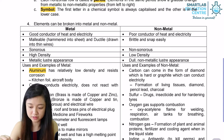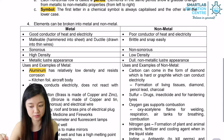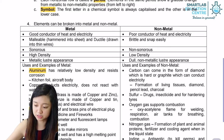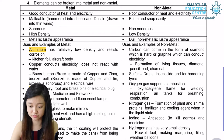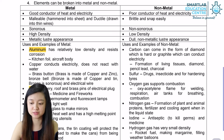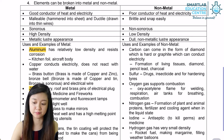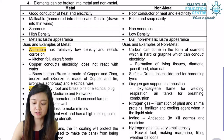Sulphur is also a non-metal and can be used for drugs or insecticide. Oxygen is another non-metal which supports combustion. Nitrogen gas is good in the formation of plant and animal proteins and fertilisers. Iodine is used as an antiseptic to kill germs and in medicine. Hydrogen gas has a very small density, so it is used for rocket fuel or making margarine.